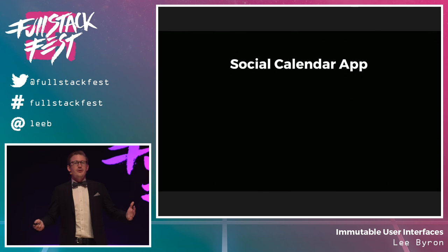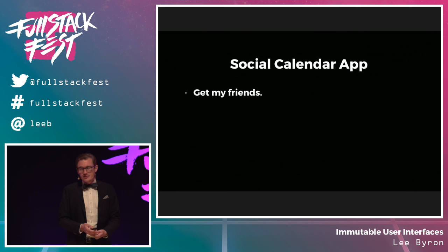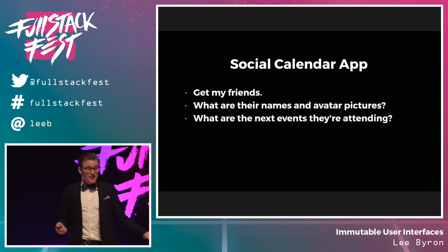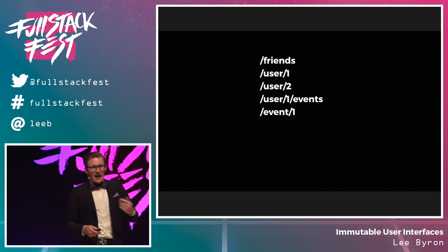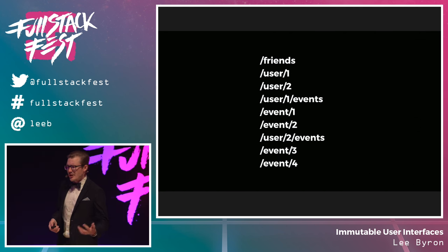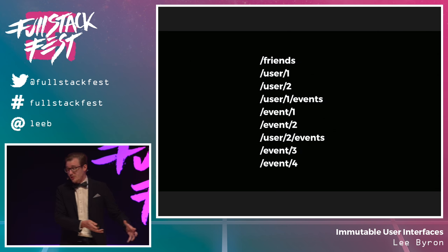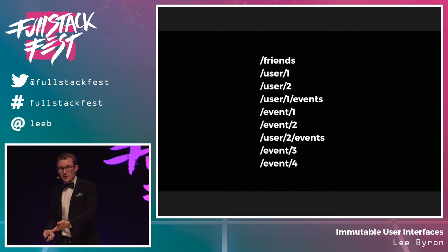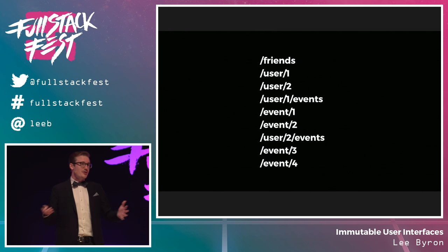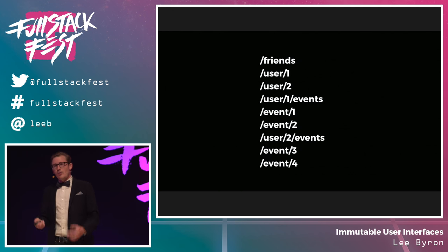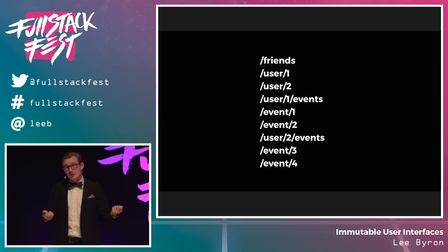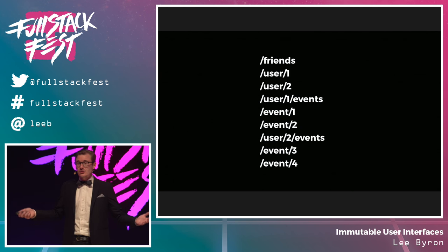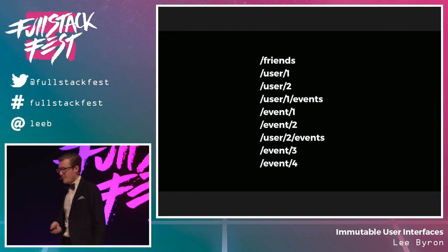Say we want to build a social calendar app. We need to get our friends, their names and profile pictures, the next events they're attending, and the names and details of those events. Since REST APIs typically return URLs when one resource references another, we end up loading lots of things dependent on others — waiting for previous URLs to load before starting the next. Even new things like HTTP/2 pipelining can't help solve this. For moderately complicated apps, you're talking about three, four, five-second slowdowns just from latency.